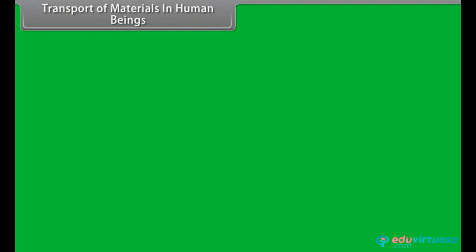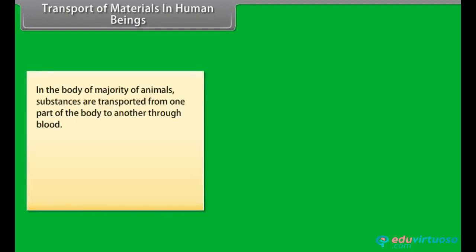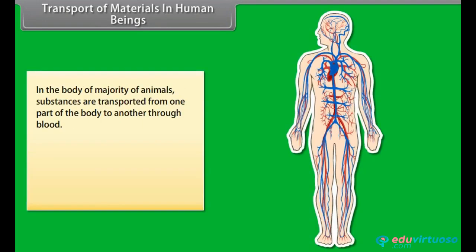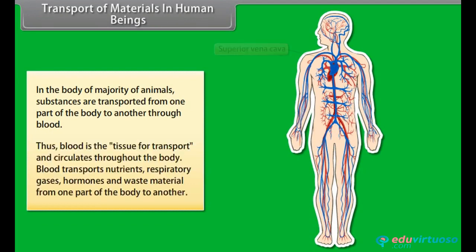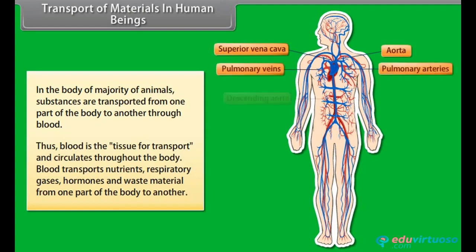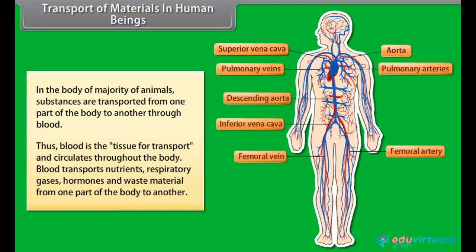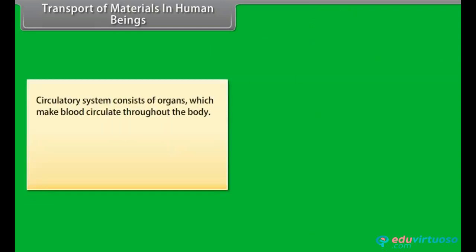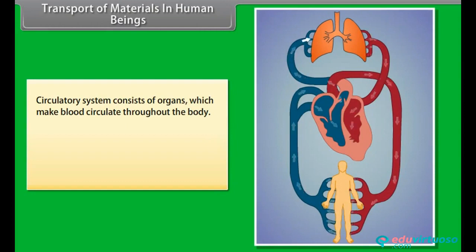In the body of the majority of animals, substances are transported from one part of the body to another through blood. Thus, blood is the tissue of transport and circulates throughout the body. Blood transports nutrients, respiratory gases, hormones and waste material from one part of the body to another. The circulatory system consists of organs which make blood circulate throughout the body.